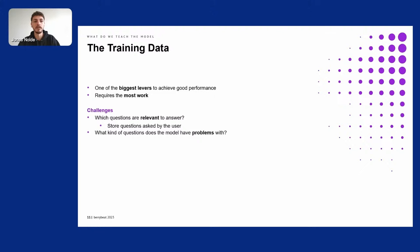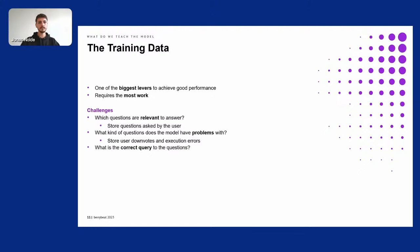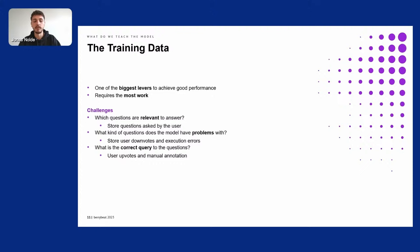Second, what kind of question does the model have problems with? As shown before, we ask our users to give feedback with an up or down vote. Downvoted answers will be looked at, corrected, and then added to the training data. Also, if a query has execution errors, we know we have to correct it. Third, what is the correct query to the question? In supervised learning you must provide a correct answer. We use upvoted answers to know which queries are correct and add them to training data. We also annotate wrong queries manually using a labeling interface that makes it easy and fast.